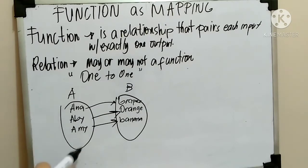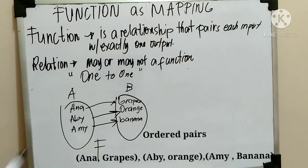When we say function, that is a relationship that pairs each input with exactly one output. So, ibig sabihin, meron sila. Si Anna meron. So, ibig sabihin natin it's a function. Function yan. Kasi merong input, meron din output. At isa pa, hindi rin nauulit yung domain natin.